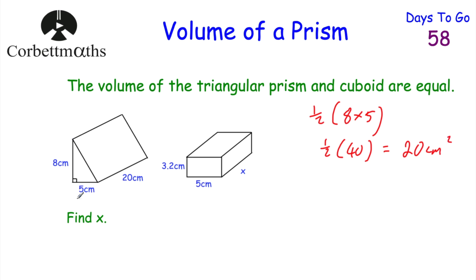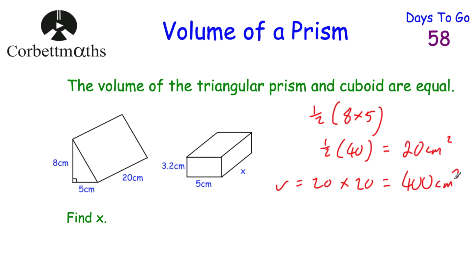We multiply the cross-sectional area by how long the prism is, which is 20. So the volume equals 20 multiplied by 20, which is 400 centimetres cubed. The volume of this triangular prism is 400 centimetres cubed.